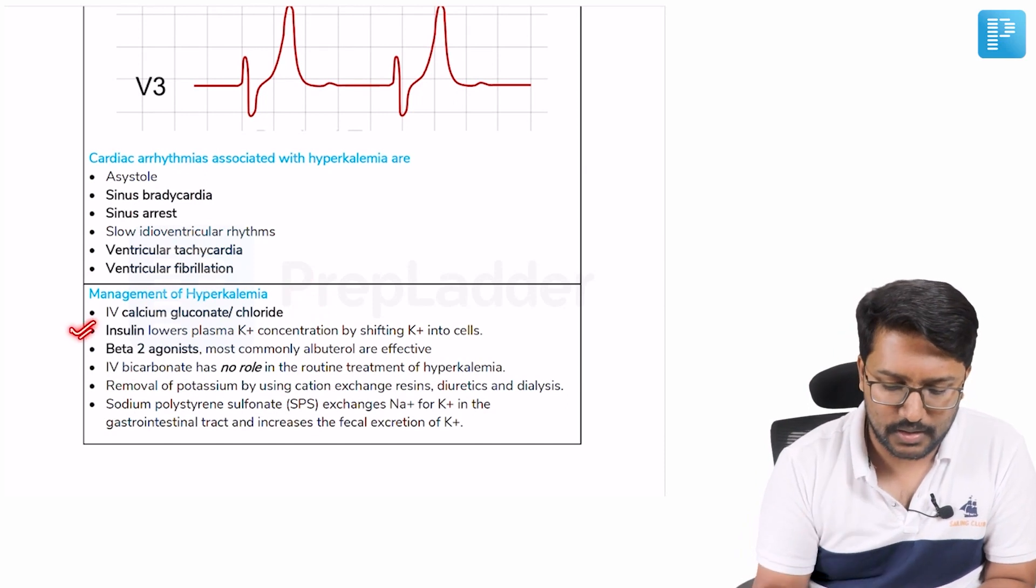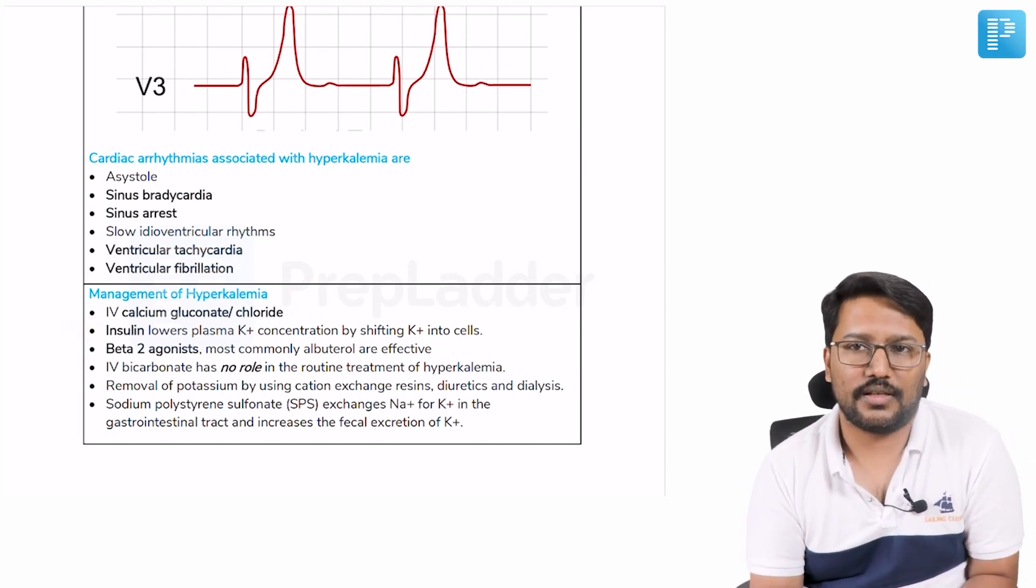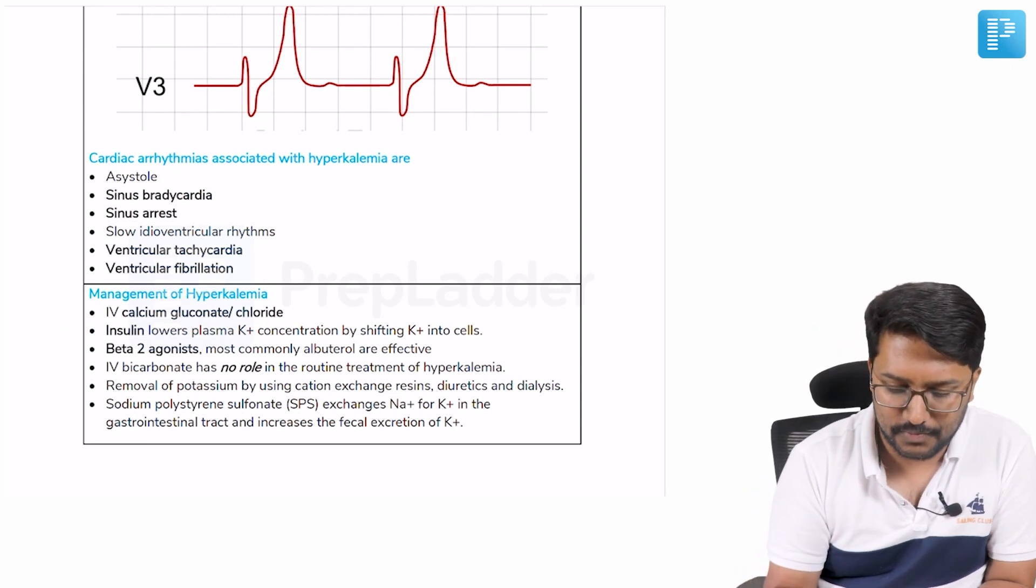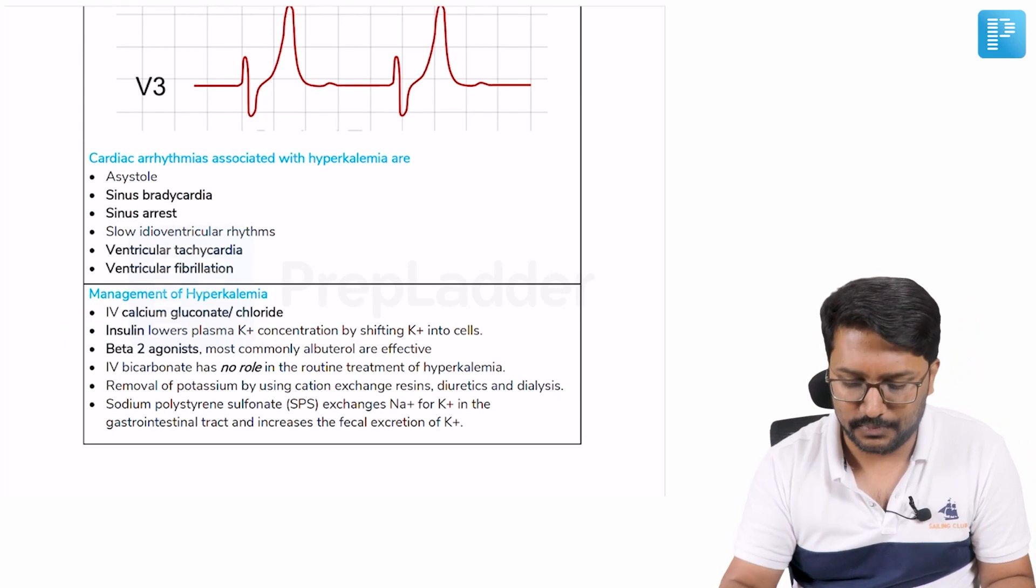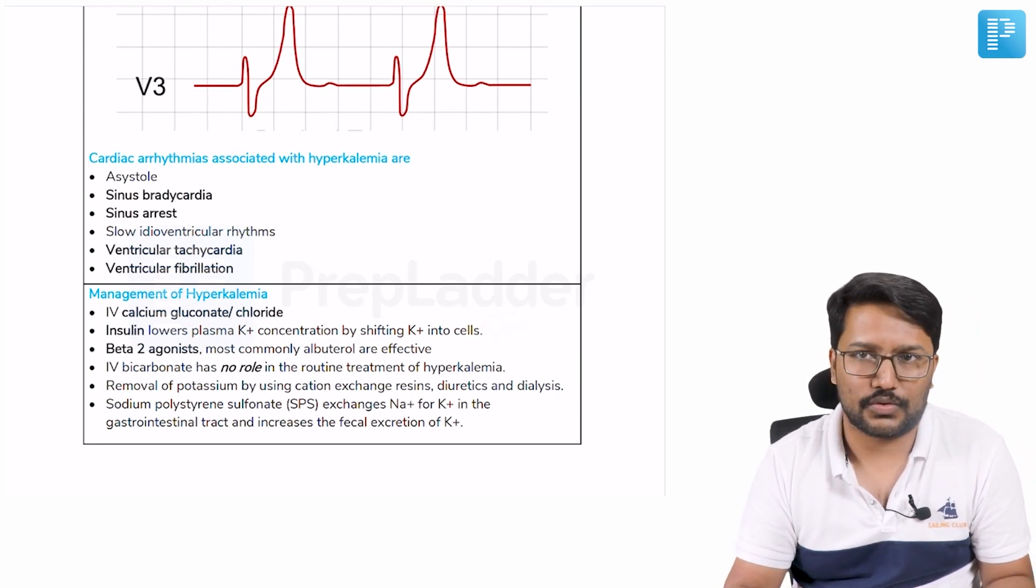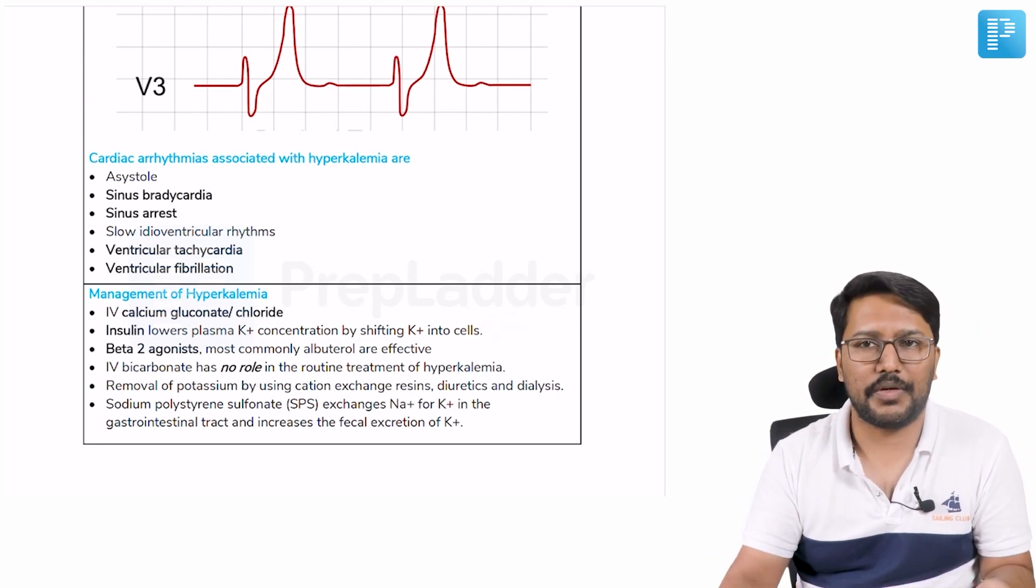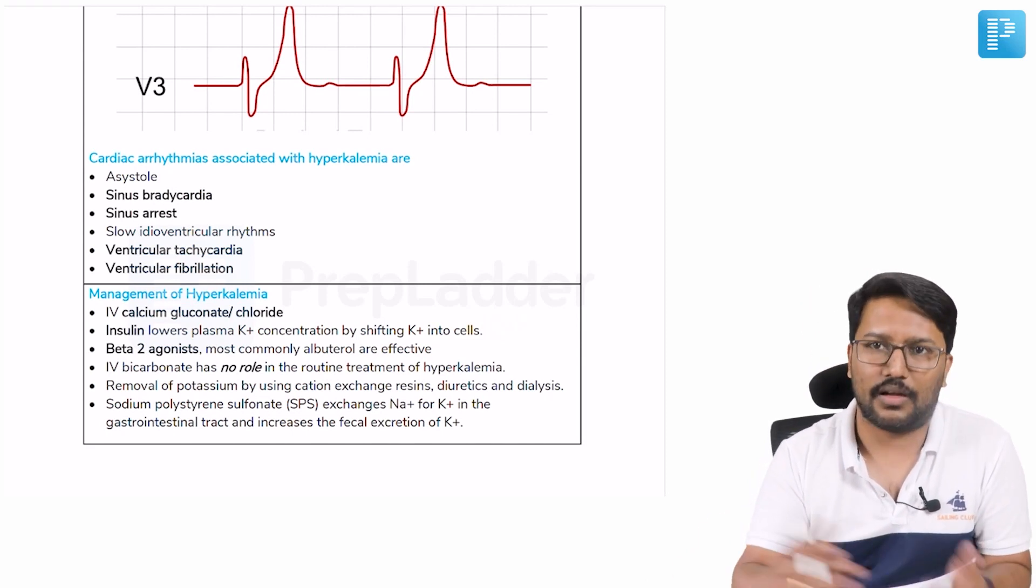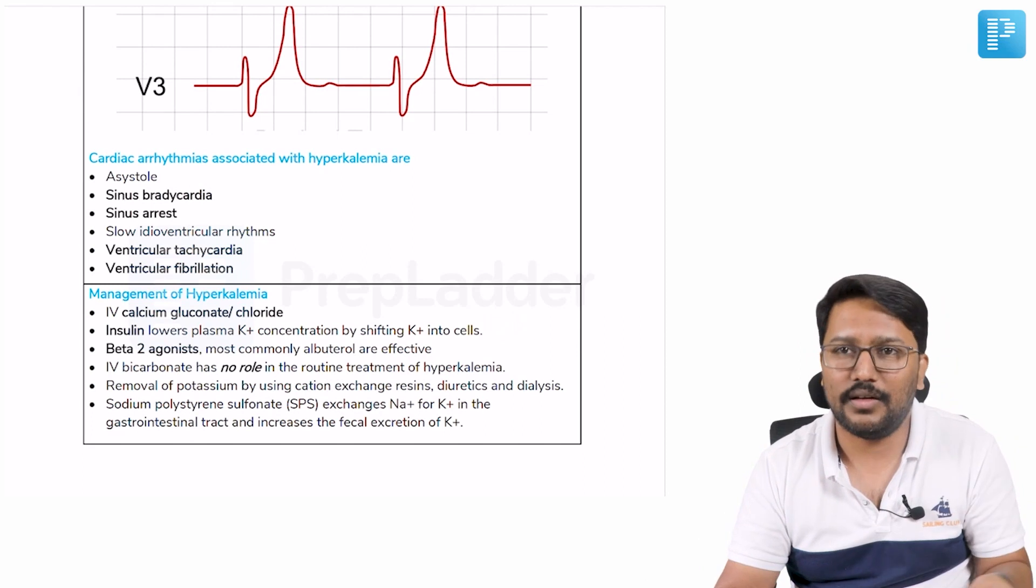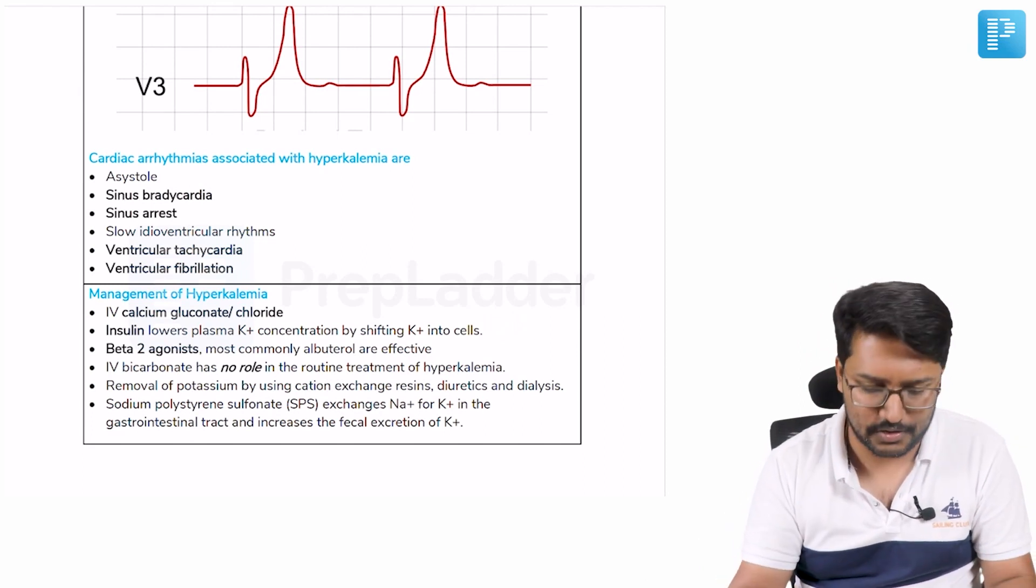Then we can use insulin along with glucose to help facilitate shift of potassium from the extracellular compartment into the intracellular compartment. Insulin with dextrose. If it's diabetic patients with already high blood glucose levels, maybe insulin alone, but in other patients to avoid development of hypoglycemia we also give dextrose.